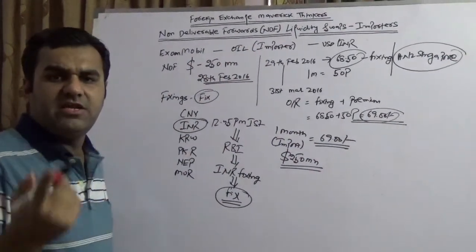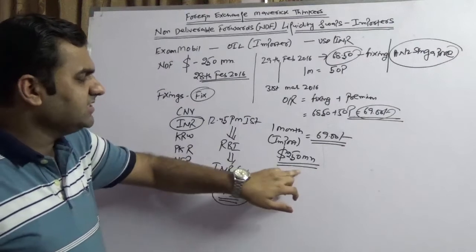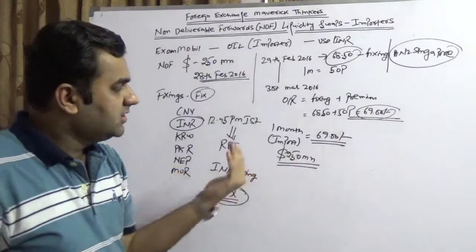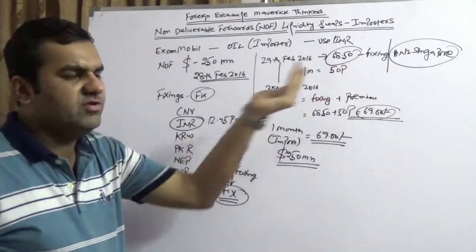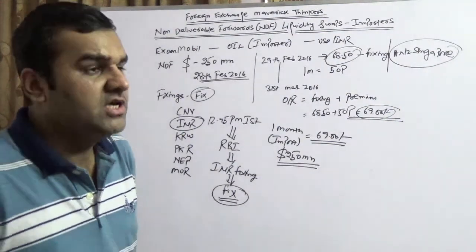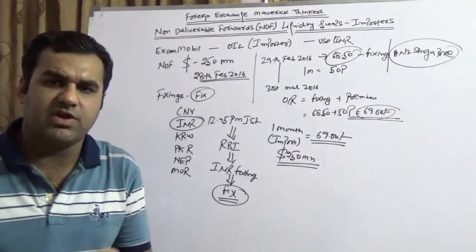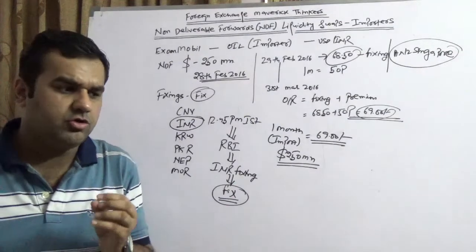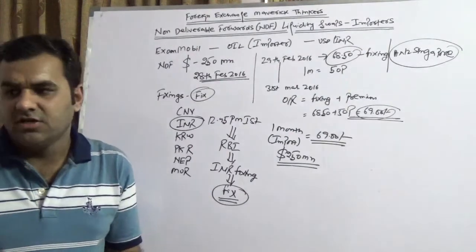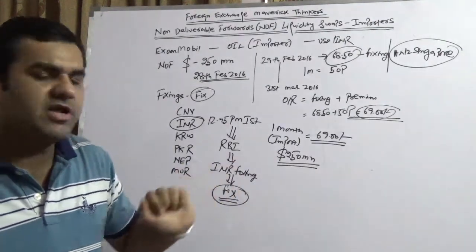Third, you will not deliver anything. So ExxonMobil will not deliver this 250 million dollars. If ExxonMobil will not deliver 250 million dollars, of course, rule number four, the so-called ANZ Singapore will not give any INR. The fifth and the golden rule, the net settlement would happen in dollar. Of course, the net settlement can happen in any foreign currency. It could happen in GBP, CHF Swiss franc, US dollar, Chinese yuan, it could be Singapore dollar. But that cross needs to factor it in the pricing. But we are going ahead with the general principle of non-deliverable forward contract that the settlement would happen in dollars.